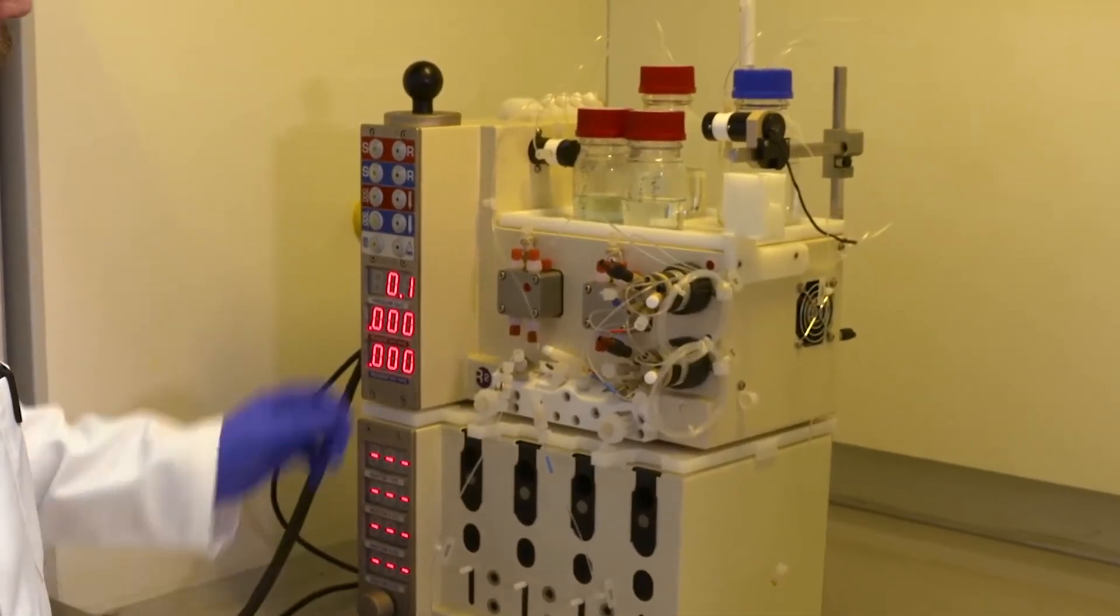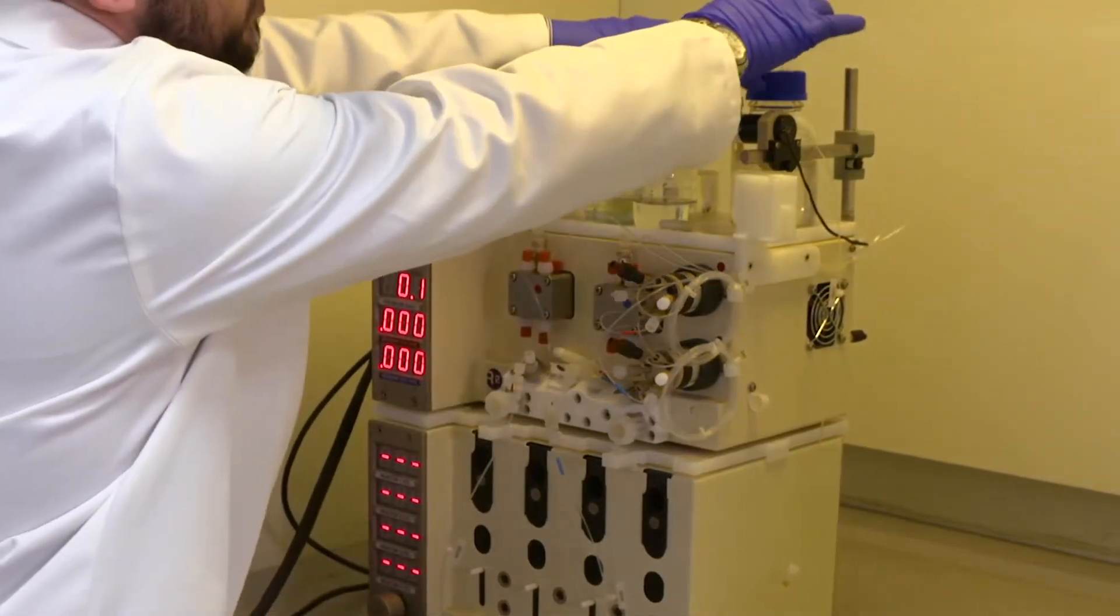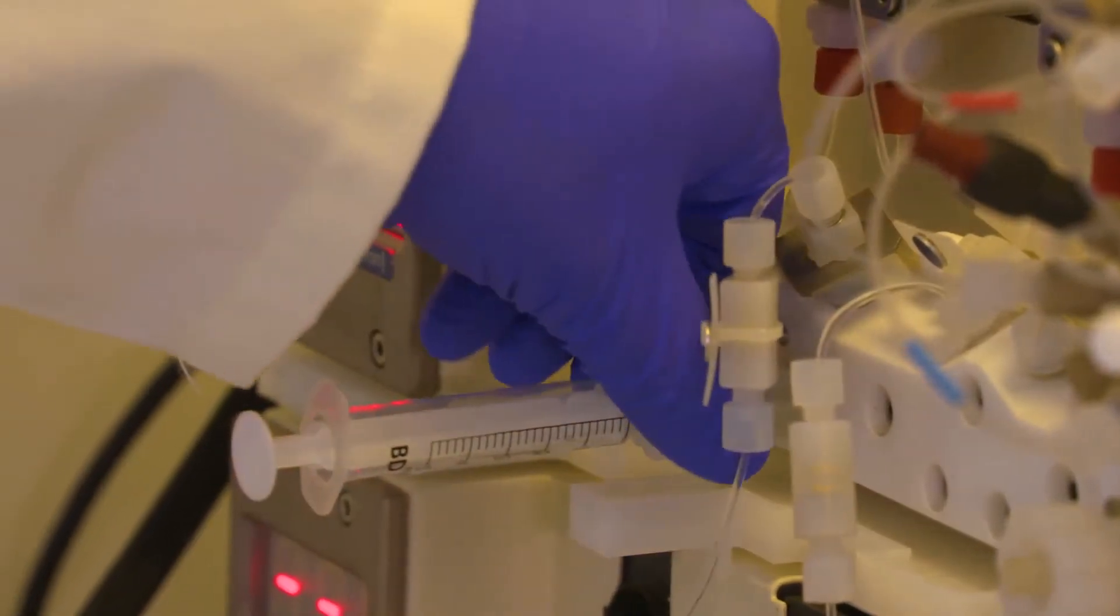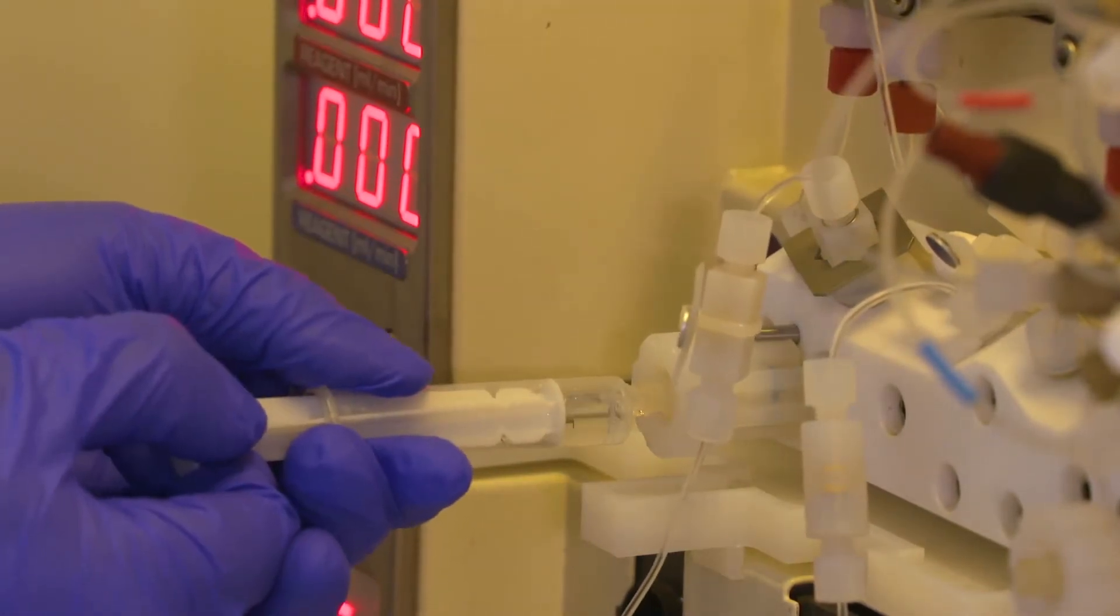To fill the pump with solvent, the first thing to do is put the switching valve into the reagent position. Then using my syringe, I open the priming valve one full turn and pull through one or two milliliters of solvent.